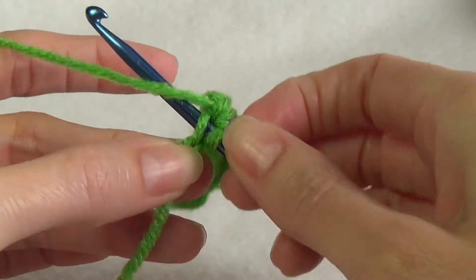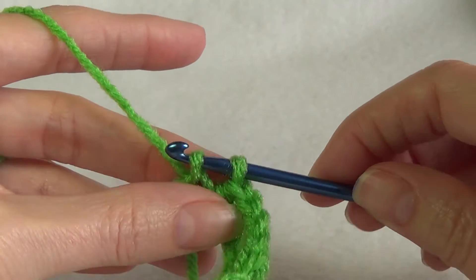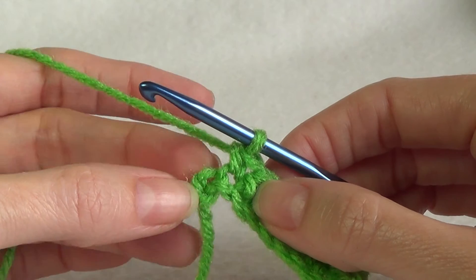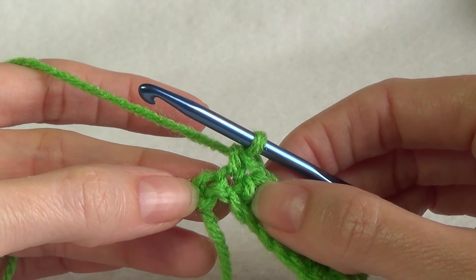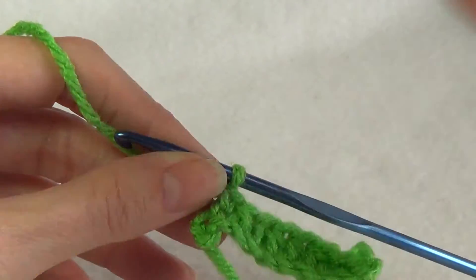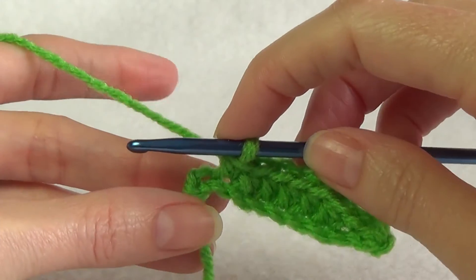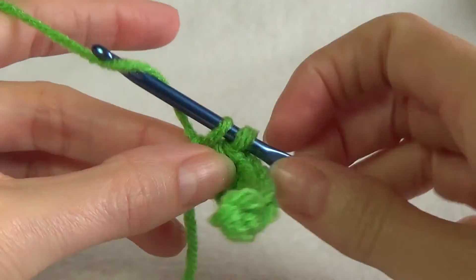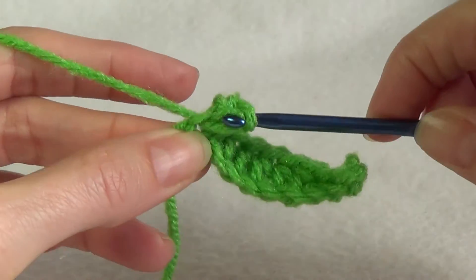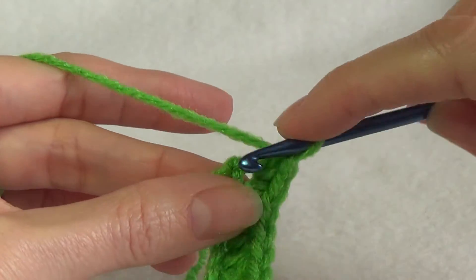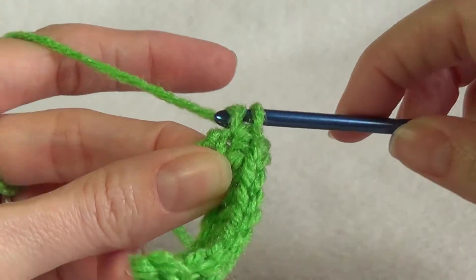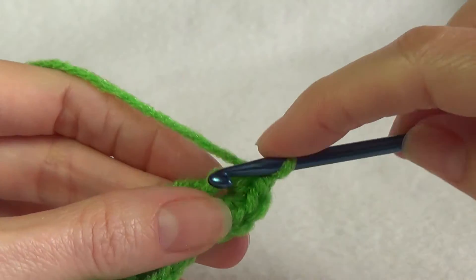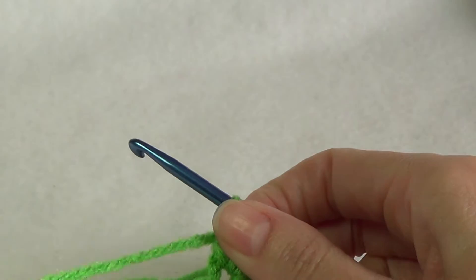You should have two chains left. We're going to single crochet into that one, and into the last chain we're going to work five single crochets. So that's five.